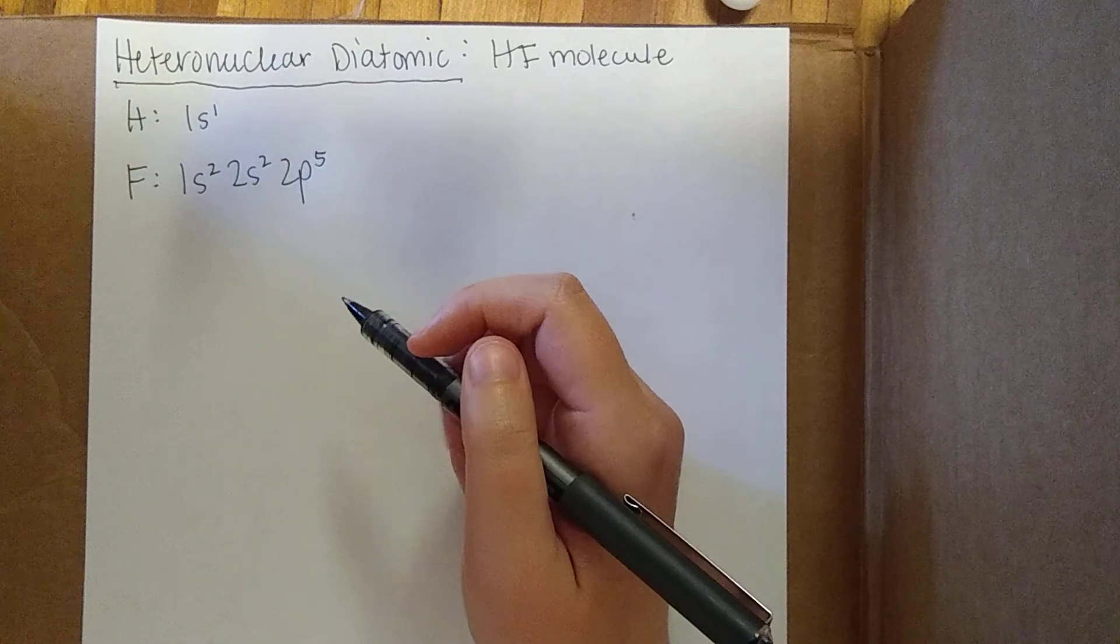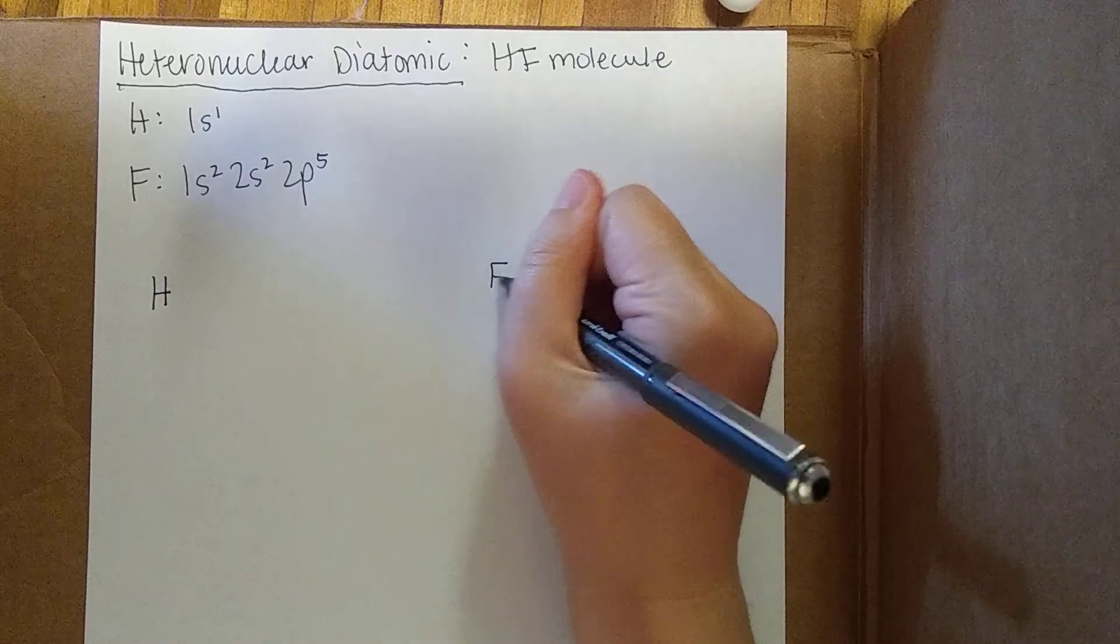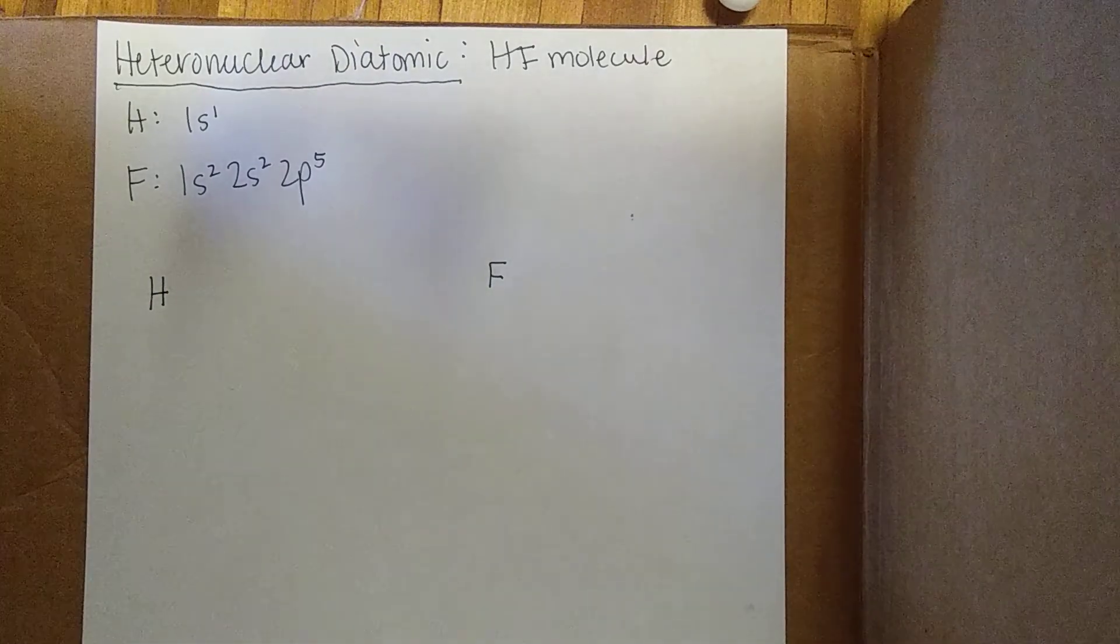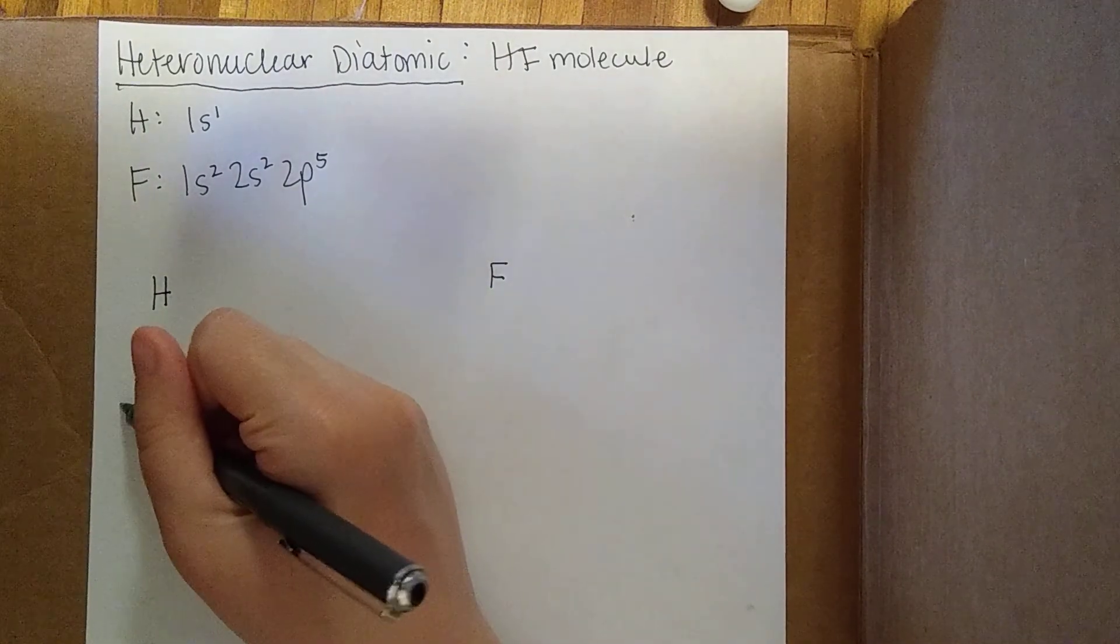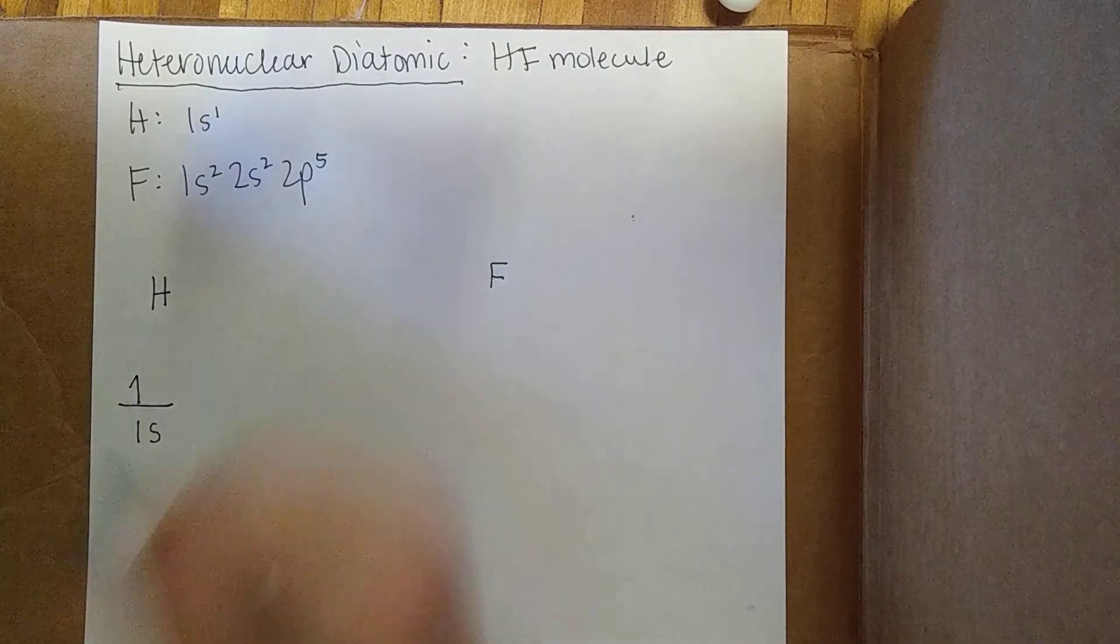We're going to begin the same way we did last time, by writing down the atomic orbitals for both hydrogen and fluorine. Hydrogen is the easier one, so let's start with that. We know we have a 1s orbital with one electron.